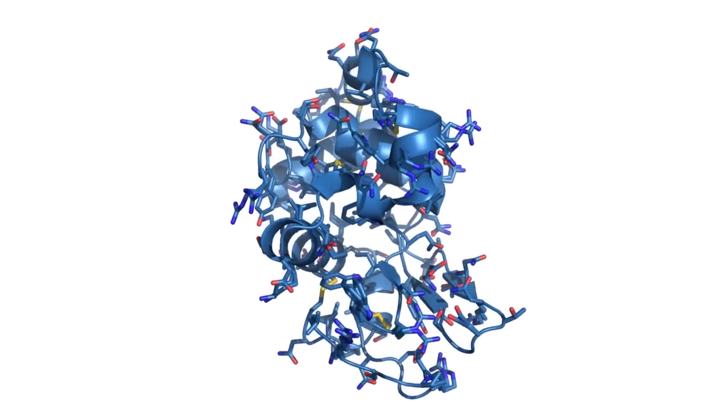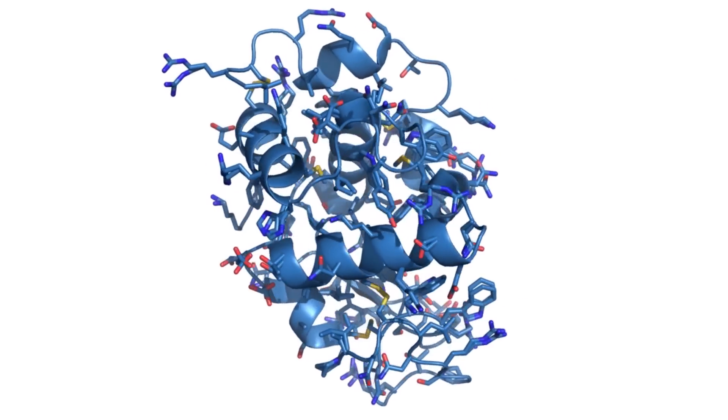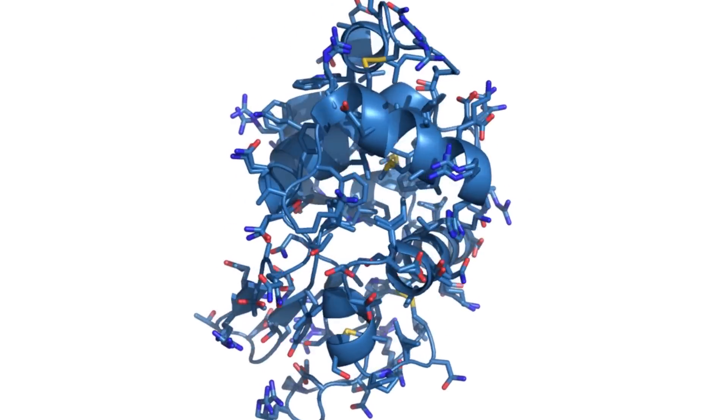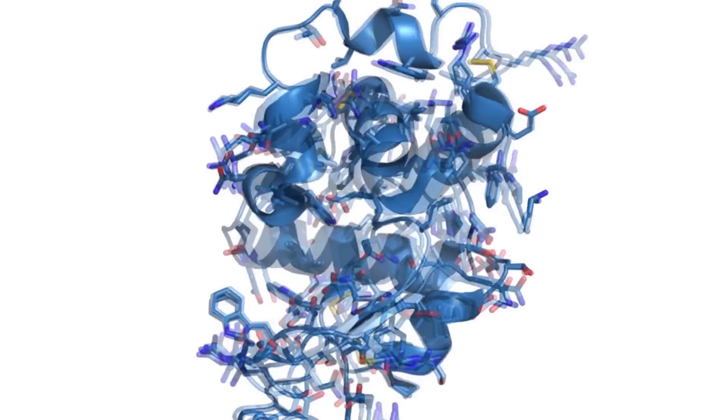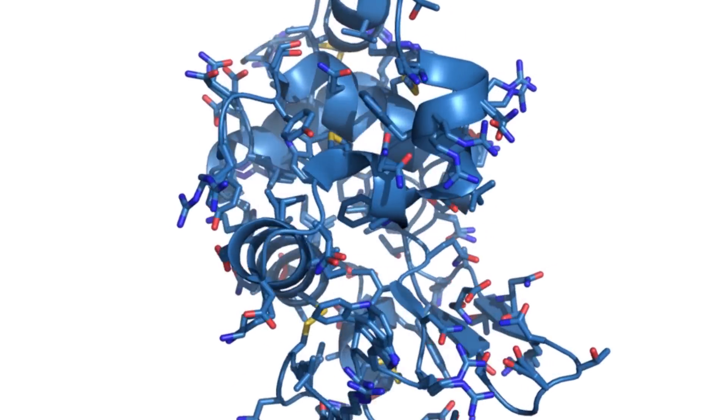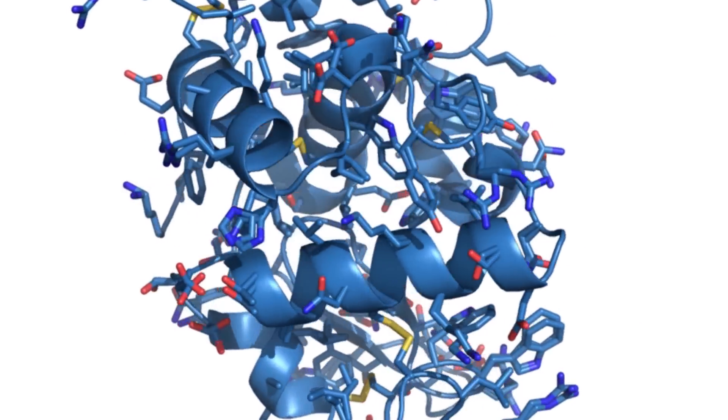We crystallize the protein of interest by placing it in a condition which will promote the atoms of the protein to form an ordered solid structure. Then we shoot the crystals with X-rays, and use mathematical analysis to obtain those beautiful structures.